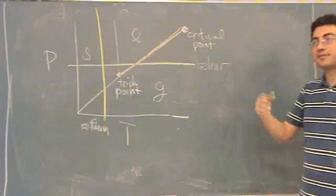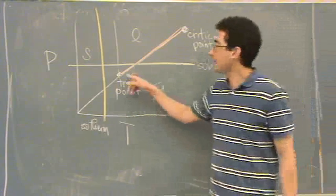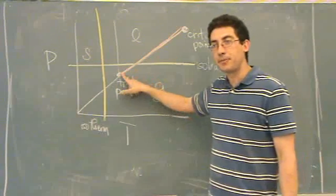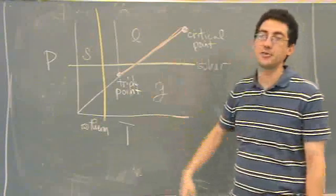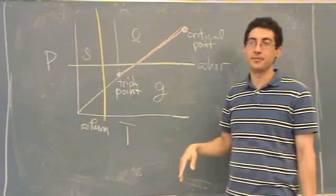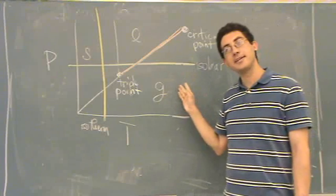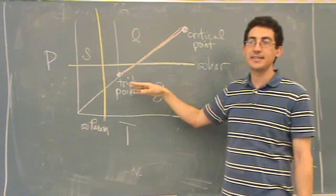So usually what we'll do is we'll have you draw this. I'll give you a couple points, like I'll give you the triple point. And then, like we did in class, I'll give you another point and say draw the isobar or draw the isotherm. Tell me what phase you start in. Tell me what the next phase is.